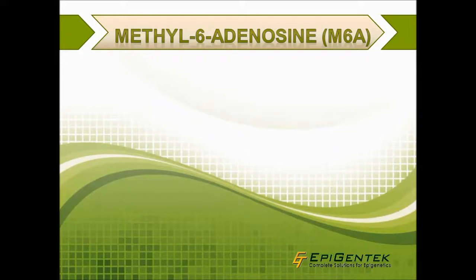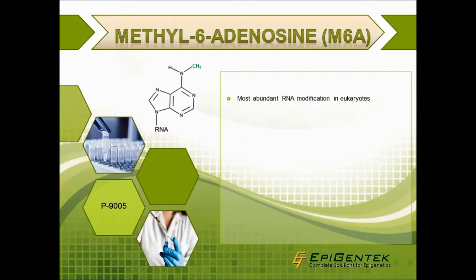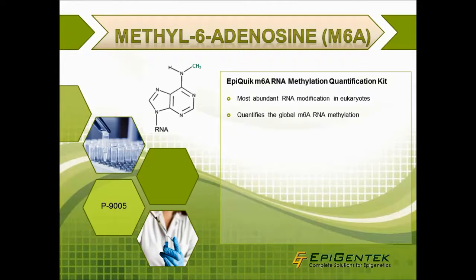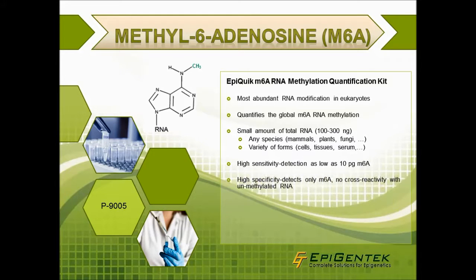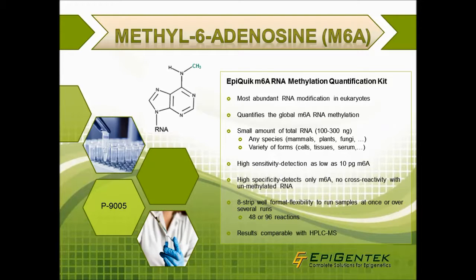M6A, also known as 6-methyladenosine or 6MA, is the most abundant RNA modification in eukaryotes. The EpiQuick M6A RNA methylation quantification kit quantifies global M6A levels using a small amount of input total RNA from any species and in a variety of forms. The kit has high sensitivity with a detection limit as low as 10 pg of M6A, and high specificity, detecting only M6A. The 8-strip-well format allows flexibility to run samples all at once or over several runs, and it's available in 48 or 96 reactions. Lastly, results are comparable with HPLC-MS analysis.